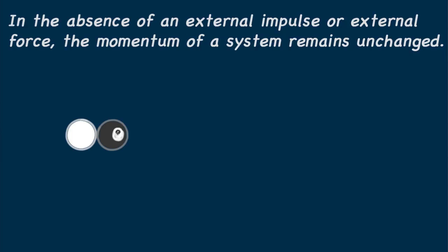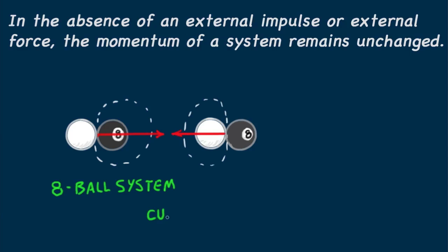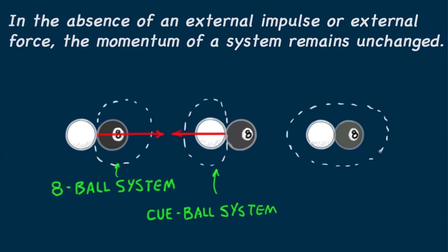When contact is made, consider the system consisting only of the eight ball, the eight ball system. When a cue ball strikes, there's an external force on the eight ball, which then gains momentum. Let's look at this from the point of view of the cue ball system. When the cue ball strikes the eight ball, a reaction force by the eight ball, which is external to the cue ball system, changes the momentum of the cue ball. It brings the cue ball to a halt.